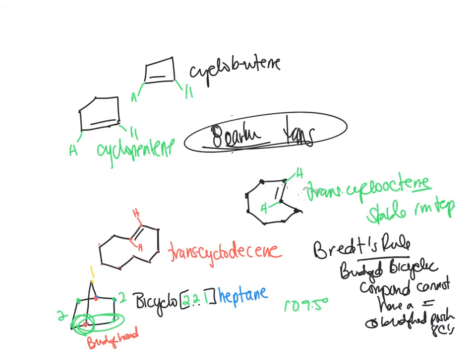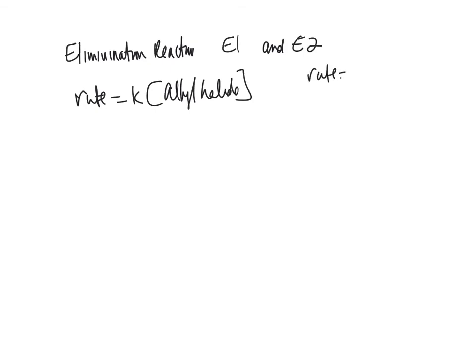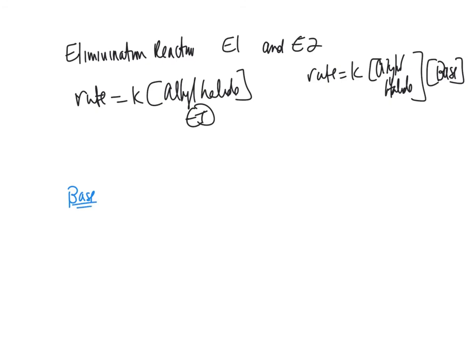Now let's talk about how to synthesize alkenes — elimination reactions. E1 means the rate of reaction is proportional only to your alkyl halide. E2 means the rate of reaction is proportional to your alkyl halide and your base. Your bases look like your nucleophiles — for example, sodium hydroxide is a strong base, and strong nucleophiles have lone pairs, often with a negative charge.